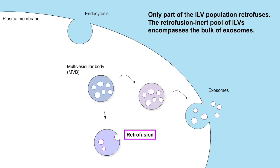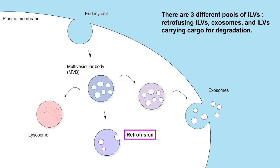Furthermore, using our assay we explored the relationship between exocytosis and retrofusion and determined that only part of the ILV population is retrofusion competent. Interestingly, the pool of ILVs inert to retrofusion encompasses the bulk of liberated exosomes, suggesting that these ILV pathways exist in equilibrium. To conclude, our findings demonstrate that there are three different pools of ILVs: retrofusing ILVs, exosomes, and ILVs carrying cargo for degradation.